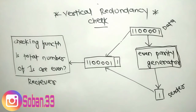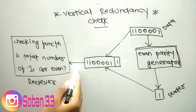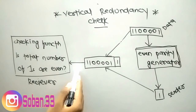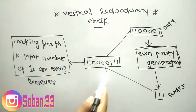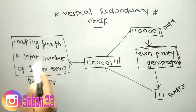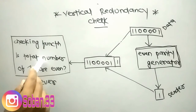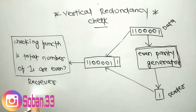The system now transmits the entire expanded unit across the network link. When it reaches its destination, the receiver puts all eight bits through an even parity checking function.